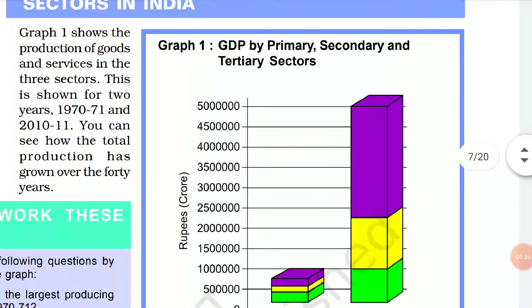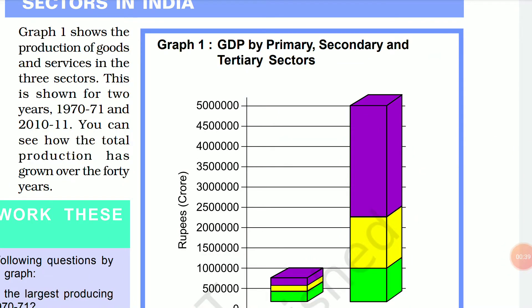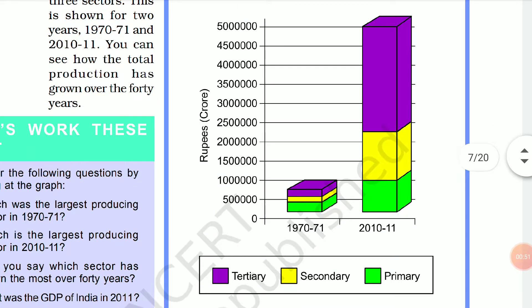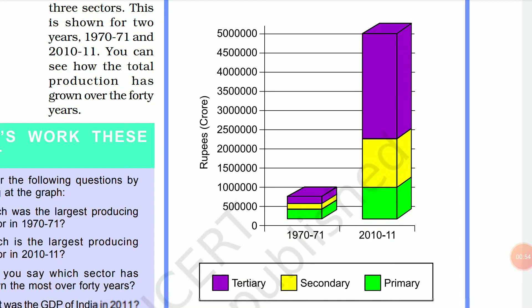Let us look at Graph 1: GDP by primary, secondary and tertiary sector. There are two axes — one shows rupees in crores and the other shows years. In terms of color, purple is tertiary, yellow is secondary, and green is primary. In 1970-71, the contribution to GDP of the primary sector was maximum, secondary was least, and tertiary was almost the same. Now if you see 2010-11, primary is least, secondary is more than primary, and tertiary is the most.